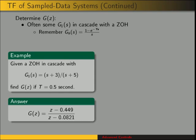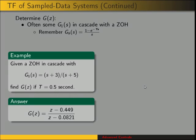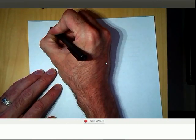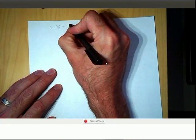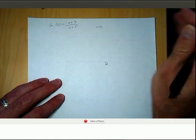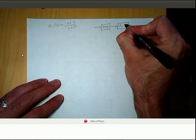So we need to determine G(Z) in order to get this transfer function. If we can find the input in the Z domain, then to get the output we need the system in the Z domain — G(Z). Assuming we have some G1(S) in cascade with a zero-order hold, we can find the transfer function as shown in this example. So we have G1(S) equal to (S + 3) over (S + 5), and for our complete system we have the zero-order hold in cascade with G1(S).